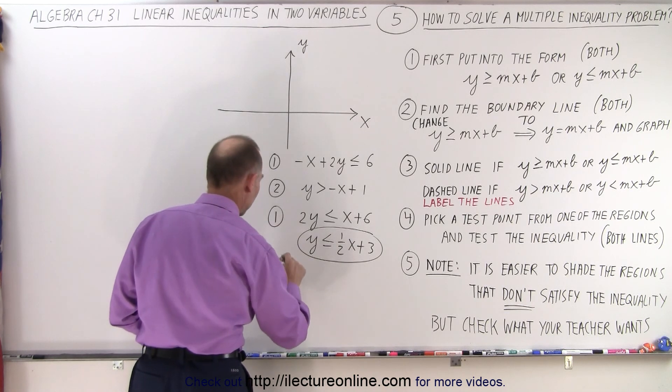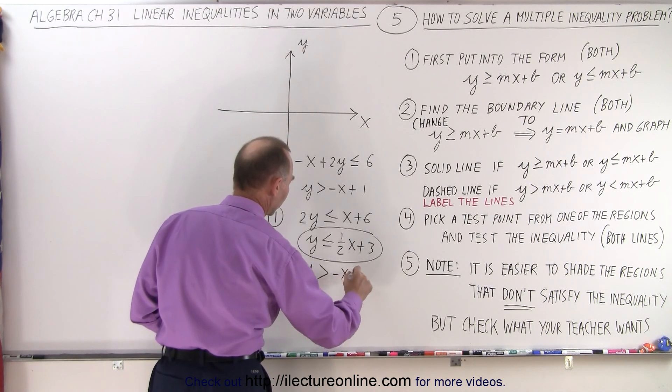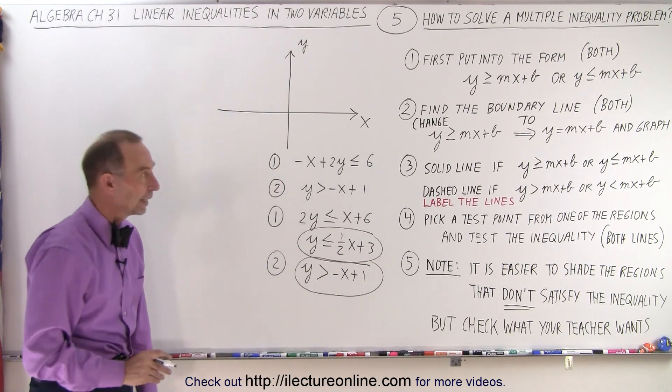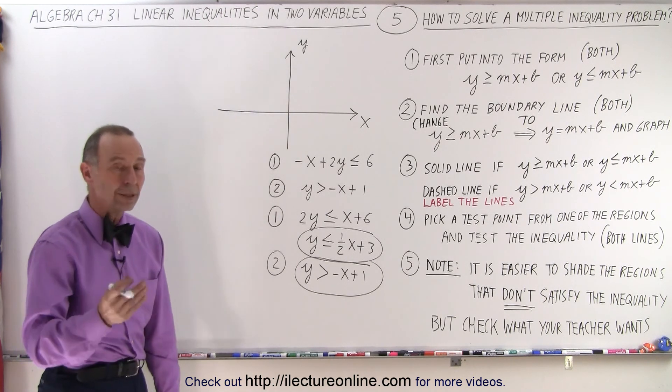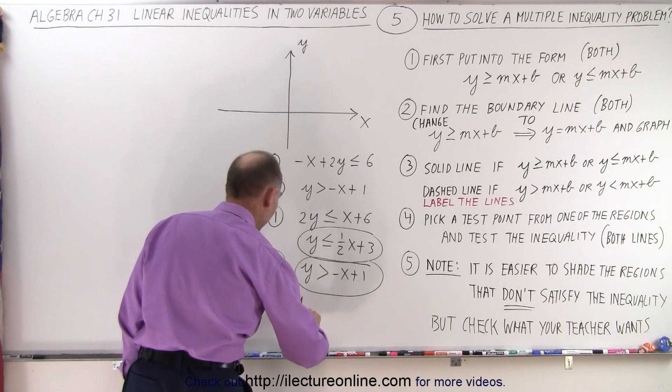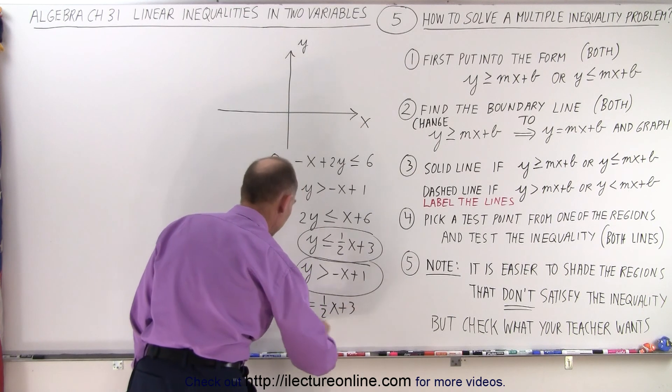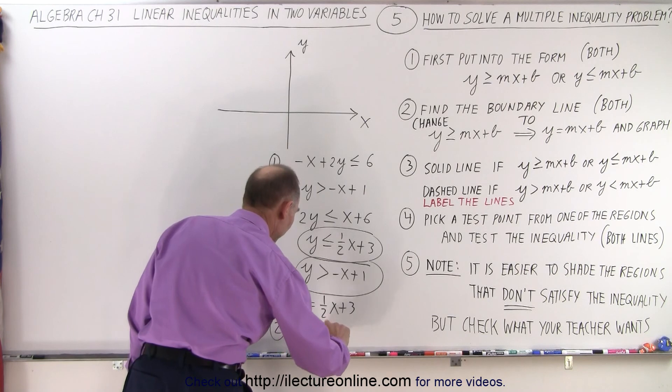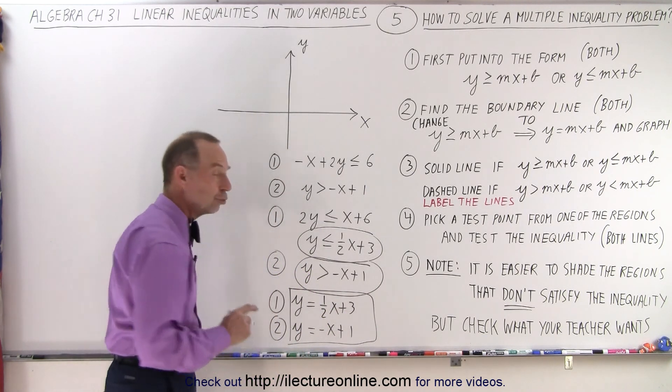The second inequality we already have in the correct form, y is greater than minus x plus 1. The next step is to take the inequality symbols and change them to equal symbols to find the boundaries. The first one becomes y equals 1/2 x plus 3, and the second one will be y equals minus x plus 1. These are the two boundary lines I am going to draw.